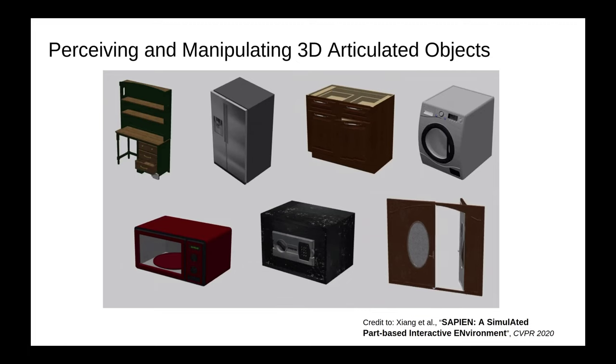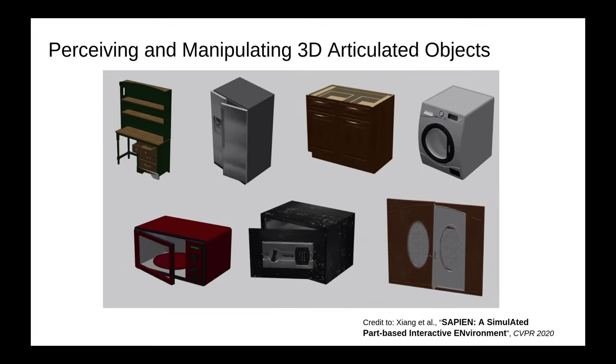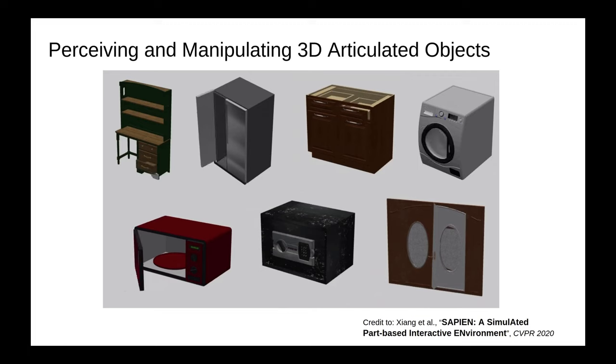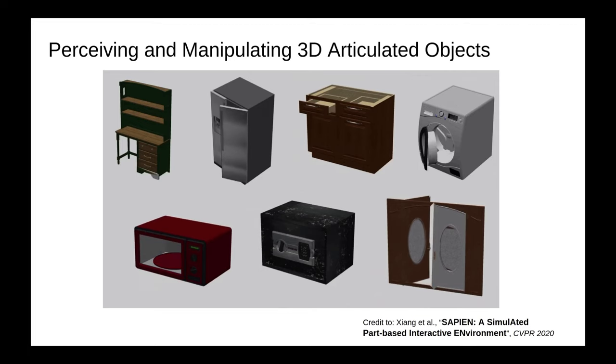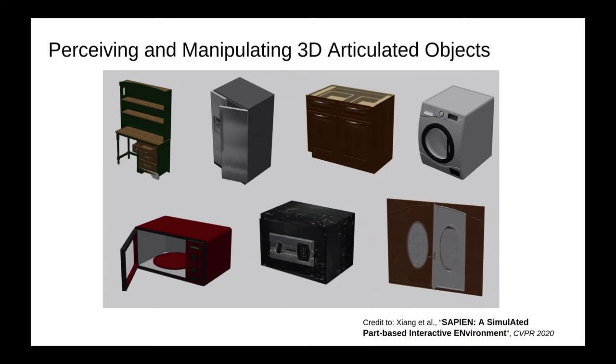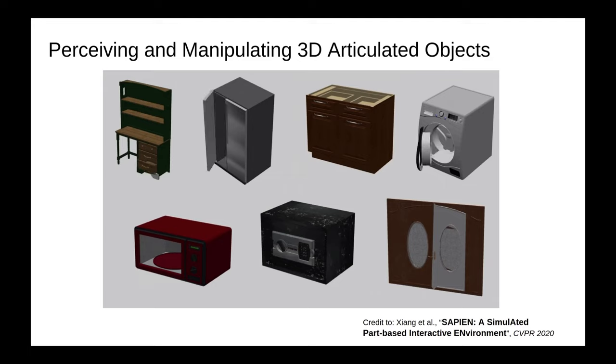The space of 3D articulated objects is exceptionally rich in their myriad semantic categories, diverse shape geometry, and complicated part functionality. It is an important yet challenging task for robots to perceive and manipulate 3D articulated objects.